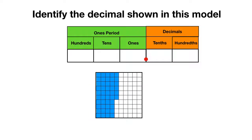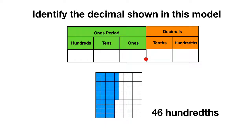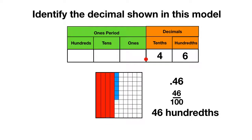Now it's time for you to try some of these on your own. Identify the decimal shown in this model. Here's a place value chart and a model. Select all the answers that correctly identify the model. You can count that we have ten, twenty, thirty, forty, forty-one through forty-six pieces. So using words you'd write that we have forty-six hundredths. As a fraction you write that we've shaded forty-six pieces out of all one hundred. And as a decimal it's .46 with a four in the tenths and a six in the hundredths, because forty-six hundredths is the same as one, two, three, four tenths, and then six extra hundredths.